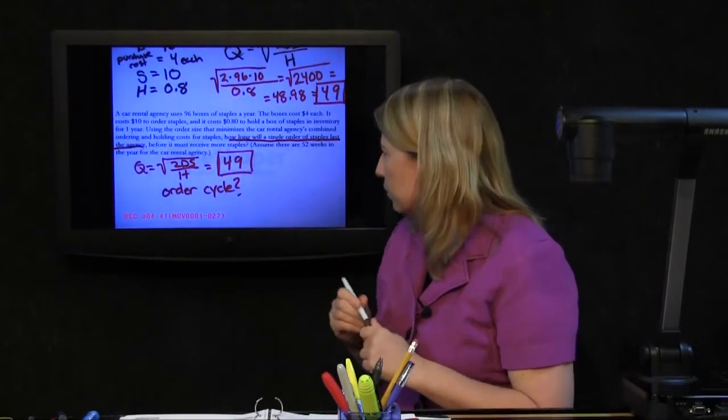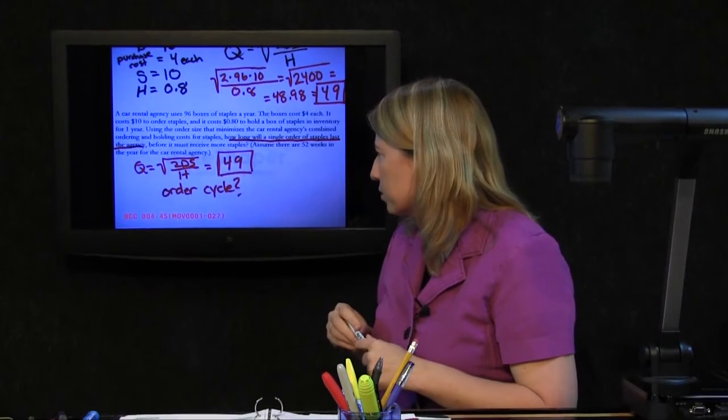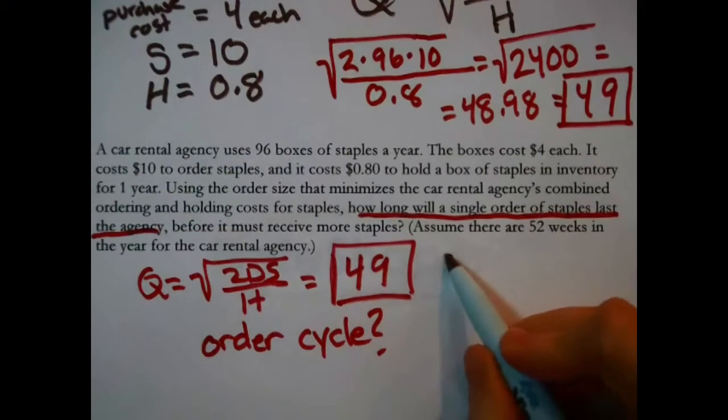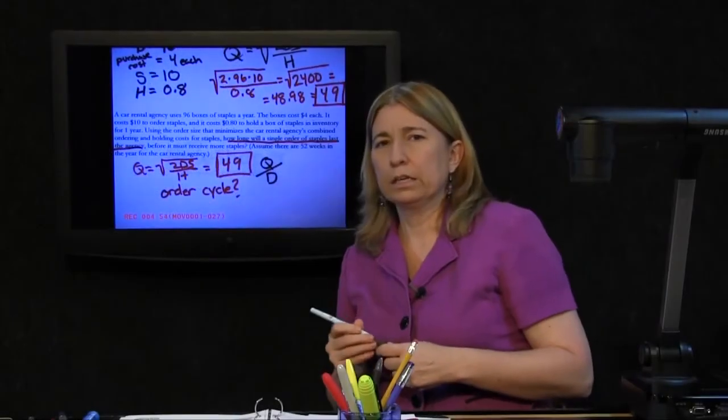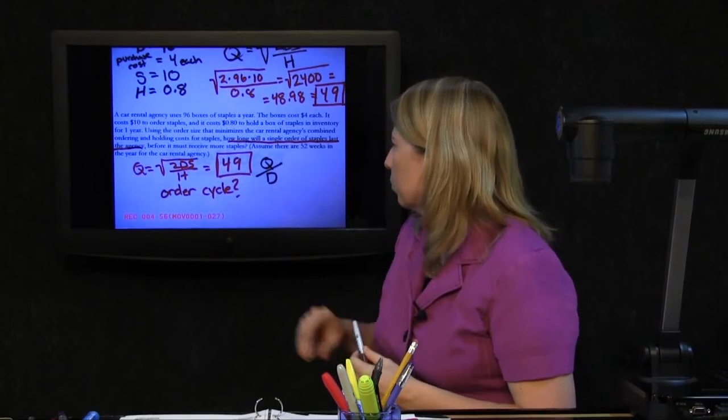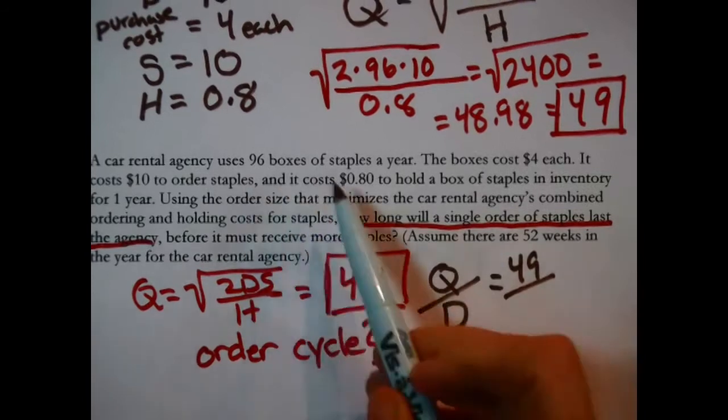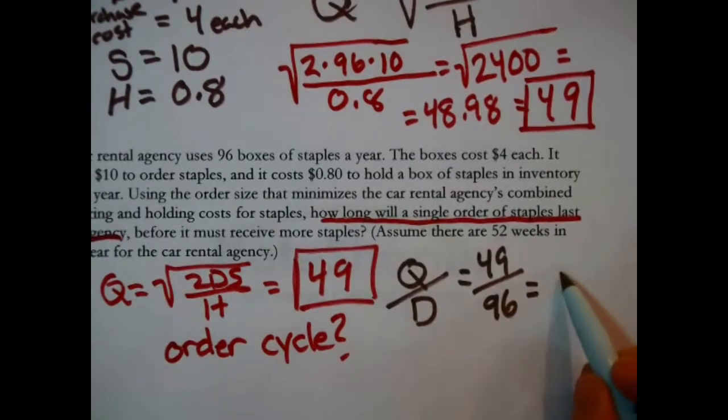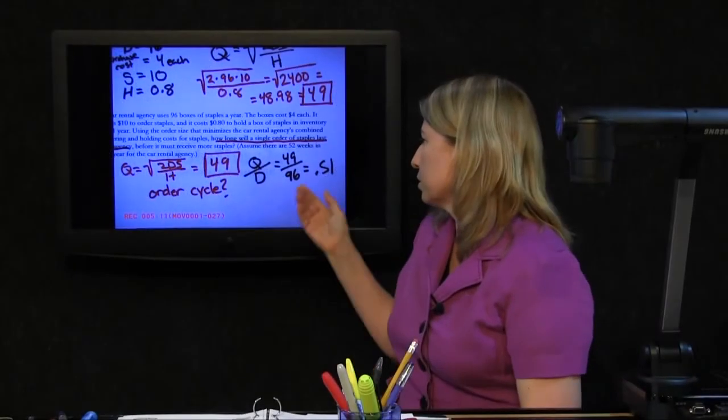The length of the order cycle, how long 49 boxes will last them - the fastest way to determine that is to remember Q over D. In this particular case, that would be 49 over the 96 boxes annual. That is how long a single box lasts, comes out to like 0.51.